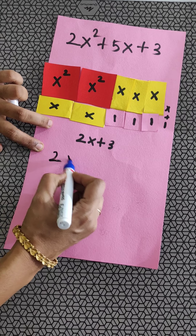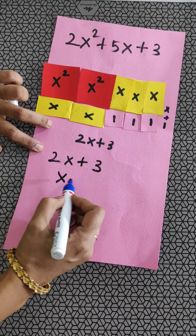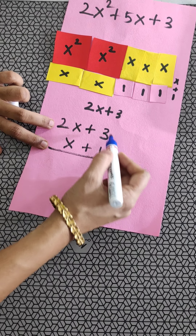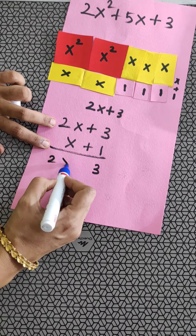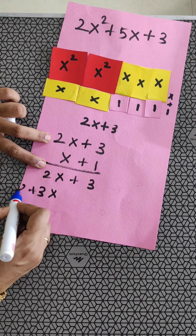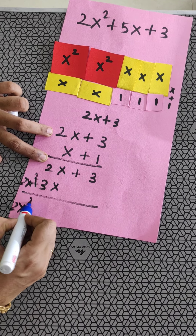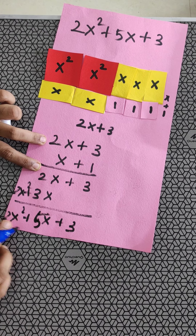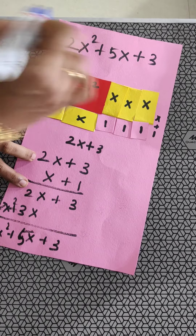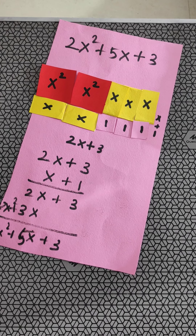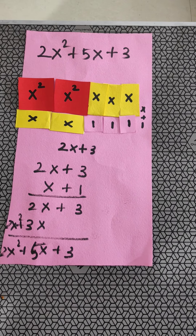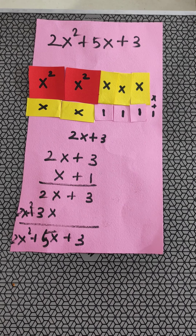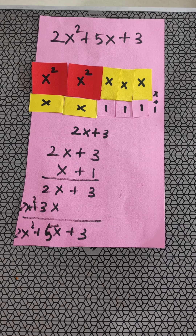Let me verify: (2x+3)(x+1) by binomial multiplication gives 2x² + 2x + 3x + 3 = 2x² + 5x + 3. We got the correct answer. So the quadratic equation factoring through this card activity is easy to understand and you will not forget it. Thank you!